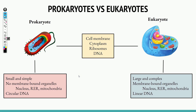Prokaryotic cells lack some of the organelles that eukaryotic cells have — specifically, they lack membrane-bound organelles such as the nucleus, the rough endoplasmic reticulum, the mitochondria, as well as vacuoles and lysosomes. In terms of DNA, both have it, but prokaryotic cells have circular DNA whereas eukaryotic cells have linear DNA — meaning it has two ends, like a line, whereas circular DNA forms a loop with no defined end.